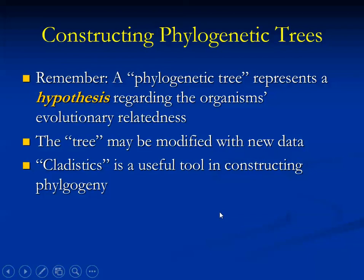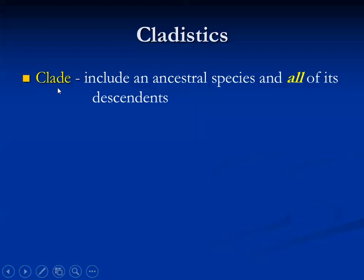An important term in cladistics is the word clade. This is an important definition to memorize. A clade always includes an ancestral species and all of its descendants. It is a grouping which includes an ancestral species and all its descendants. What we're about to do in the next mini lecture is play a little game called 'clade or no clade.'